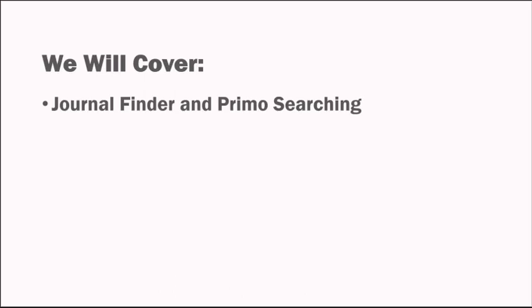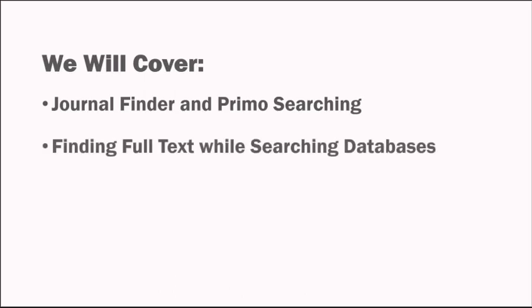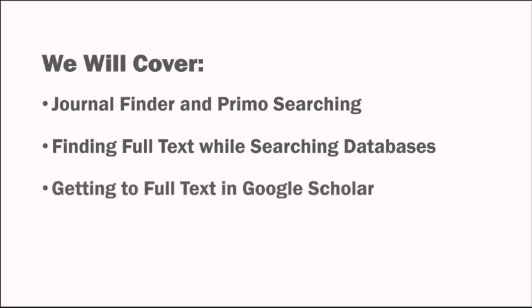You'll use these when you want to find out if the library has access to a specific journal or article. Next, we'll look at using the Find It button from within databases, which you'll use to access items that you find when you're searching. Finally, we'll talk about Google Scholar settings that can assist you with finding materials held in the TMC Library collection.